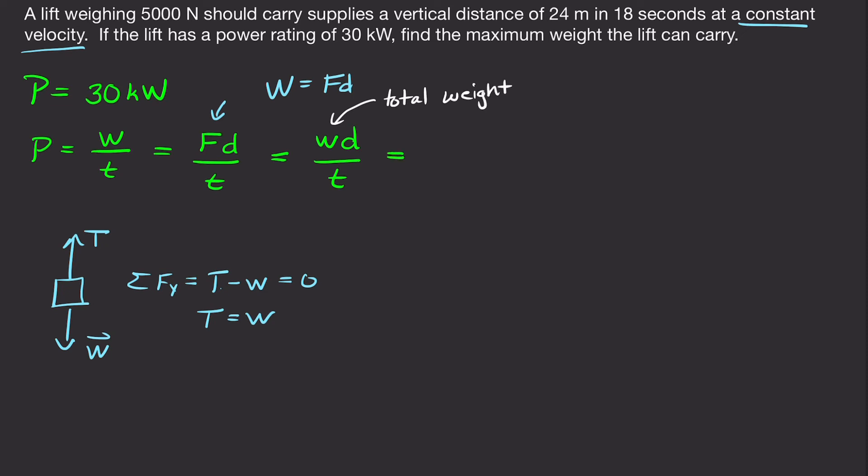So if I rewrite this, we're going to have the 5,000 Newtons of the lift plus however much weight we add to it. And then multiply that by our distance over our time. And this is our expression for power, so we can set this equal to 30 kilowatts. And now we want to solve for our additional weight that we can add because we want to find the maximum weight that we can put on our lift for it to carry. So, if we do that, find the additional weight that we can add.